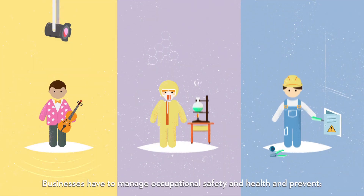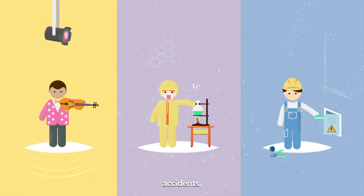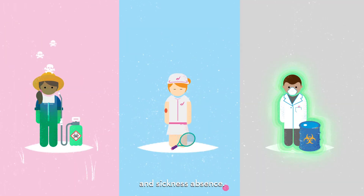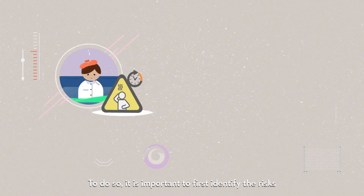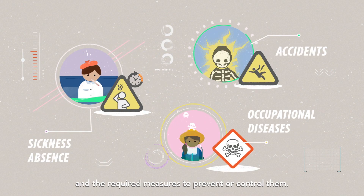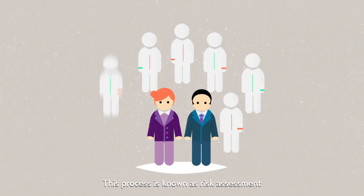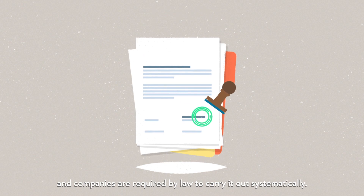Businesses have to manage occupational safety and health and prevent accidents, occupational diseases and sickness absence. To do so, it is important to first identify the risks and the required measures to prevent or control them. This process is known as risk assessment, and companies are required by law to carry it out systematically.